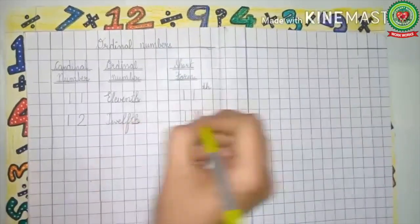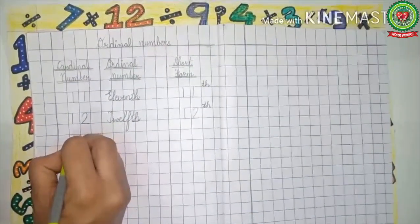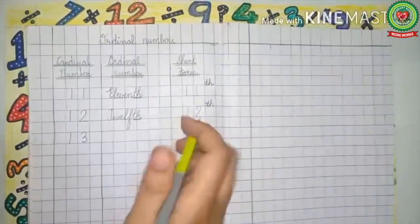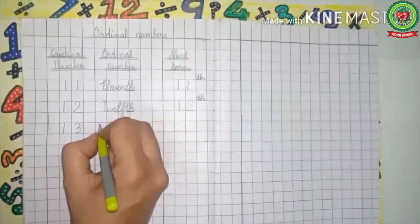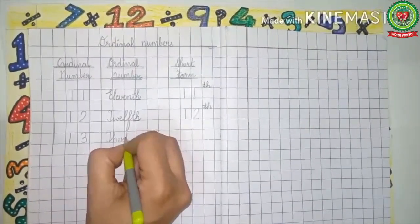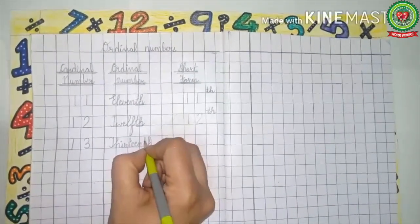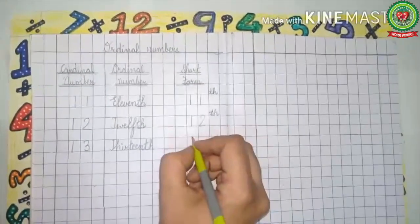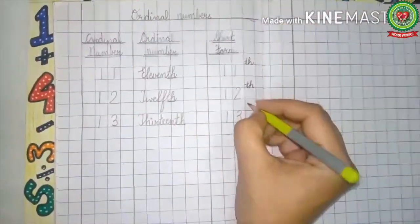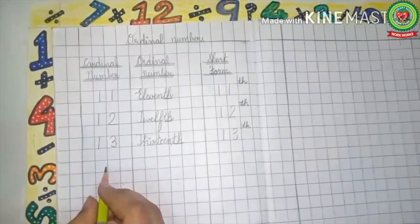Next is 13, and the ordinal number of 13 is 13th. Spell 13 with me: T-H-I-R-T-E-E-N. Then we add TH and it becomes 13th. Again the short form is: write 13 and add the last two letters TH, and it becomes 13th.